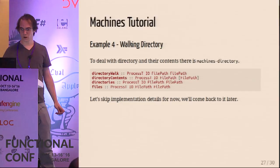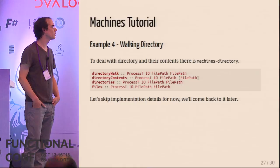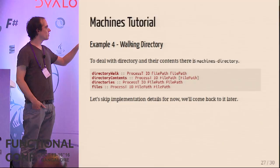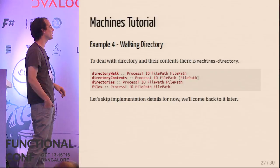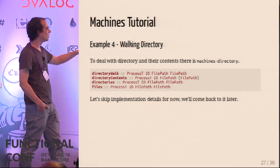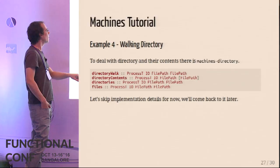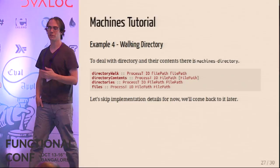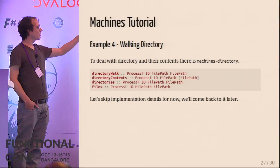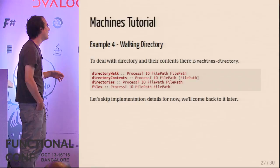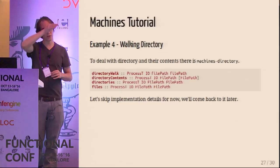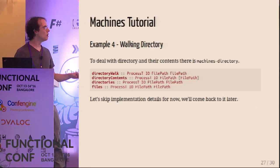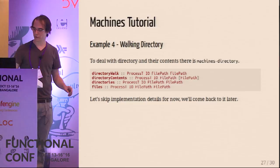There's another library, machines-directory, providing combinators for working with directories. `files` is a process in IO that takes file paths and produces file paths - it enumerates all files in given directories. Similarly there's one for directories. `directoryContents` lists all contents found at a given path. `directoryWalk` recursively traverses a directory and enumerates everything in it - useful for processing all files in a given folder. We'll get back to the implementation details later.